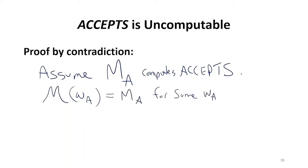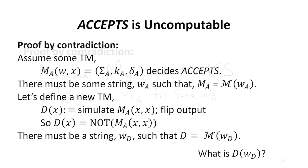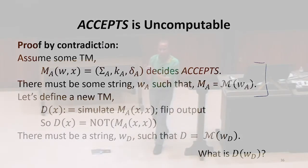But what we're going to try to do is define a new machine that now takes one input. Remember that our accepts machine takes both a description of a machine and an input X, which can be any string.